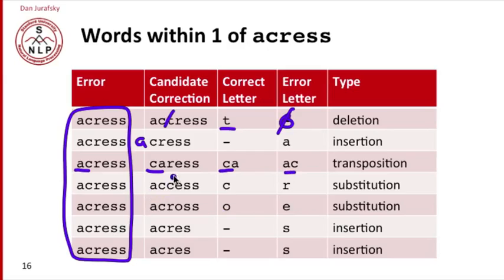The word could have been access. Here we have a substitution, this C turned into an R. Or another substitution, the word could have been across and the O turned into an E. Or an S could have been inserted to turn acres into acress. But the S could have been inserted either here or here, so there's two different ways where this source word could have turned into this error form.